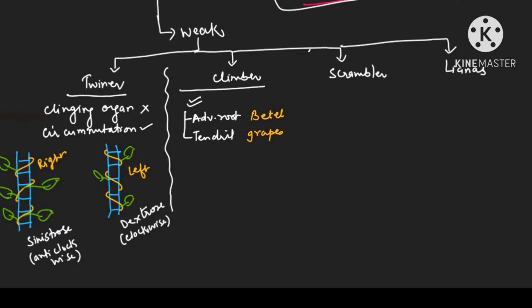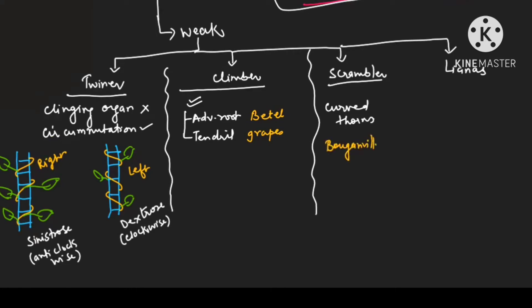The difference between clambers and scramblers: climbers make use of either adventitious roots or tendrils, but scramblers are the ones which use curved thorns. Such a condition is seen in bougainvillea.